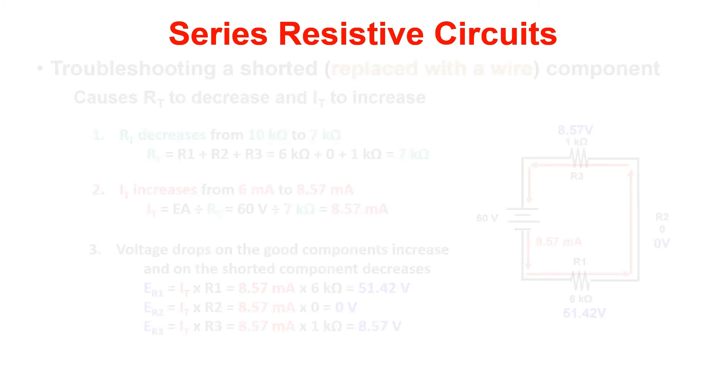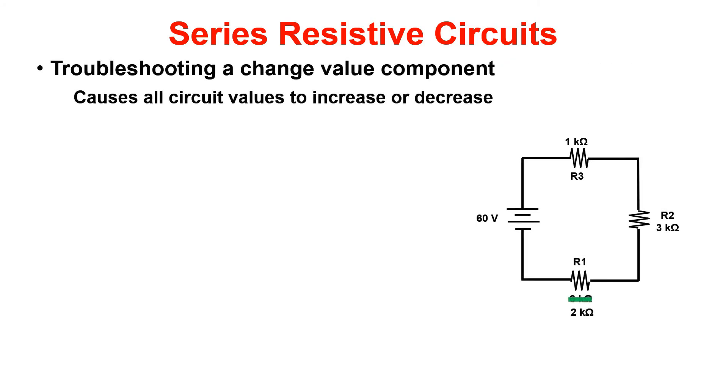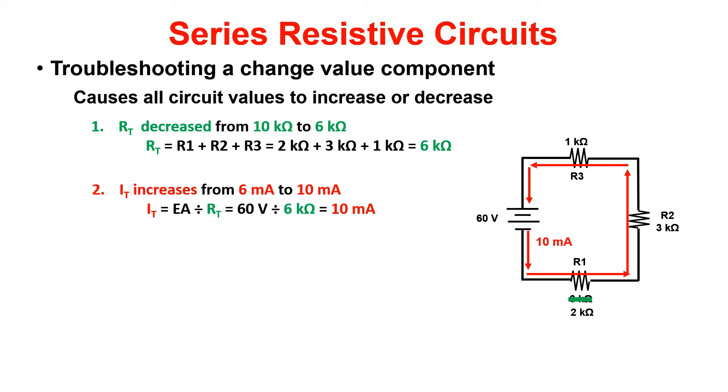This brings us to our last circuit malfunction, changed value. This causes all circuit values to increase or decrease. So we see here in our sample problem that RT decreased from 10k to 6k, which means that our current is going to increase up to 10ma. Then we calculate our voltage drops just like we would using Ohm's law.